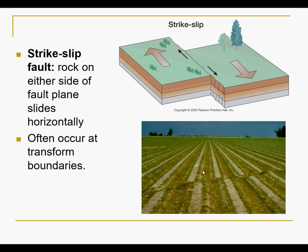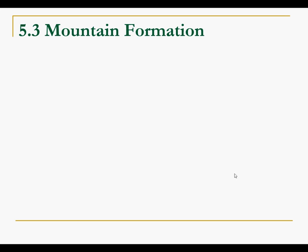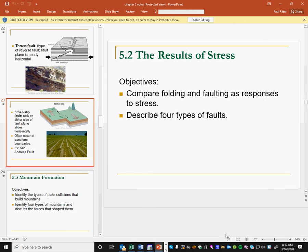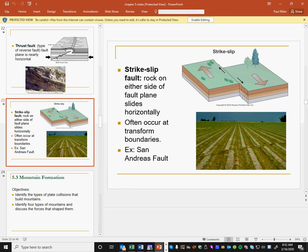A transform fault means plates going side by side. The San Andreas Fault is a good example of that. That's an overview on stress and faulting — thank you, hope you have a good day.